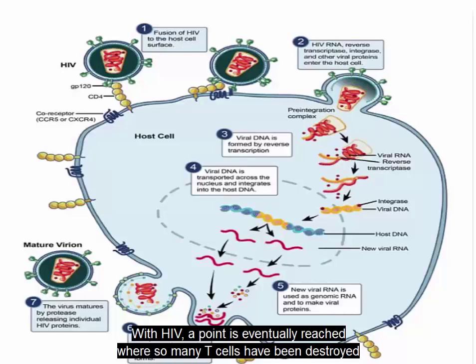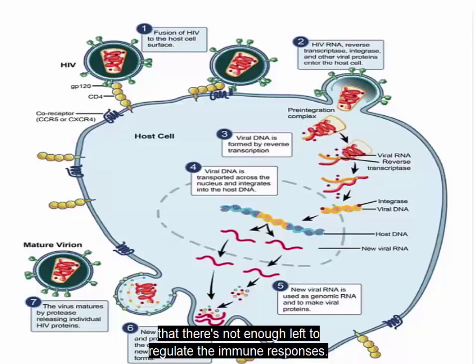Keep in mind the normal range is 800 to 1200. With HIV, a point is eventually reached where so many T cells have been destroyed that there is not enough left to regulate the immune responses.